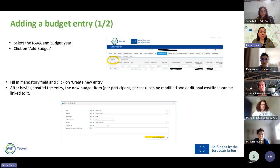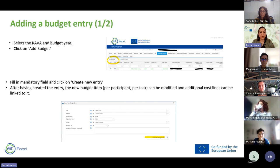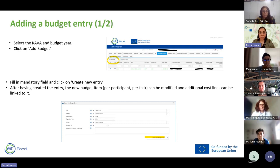To add a budget line, select your KAVA and budget year, then click 'Add Budgets.' Fill in the mandatory fields and click 'Create New Entry.' After creating the entry, the new budget item — which is per participant per task — can be modified and additional cost lines can be linked to it.